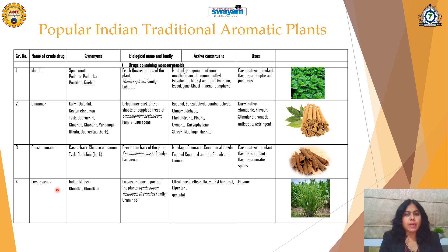Lemongrass is from the leaves and aerial parts of the plant Cymbopogon flexuosus, Family Gramineae, which contains monoterpenoids: citral, nerol, citronellal, dipentene, and geraniol. It is used as a flavorant, found to be an insect repellent, a CNS stimulant, and is a very popular flavorant for various types of teas.